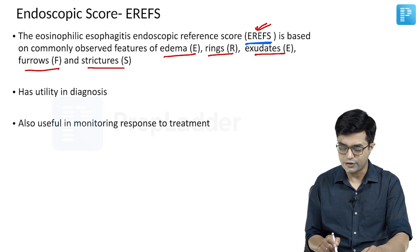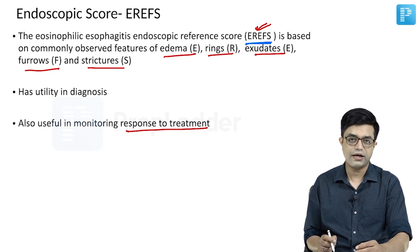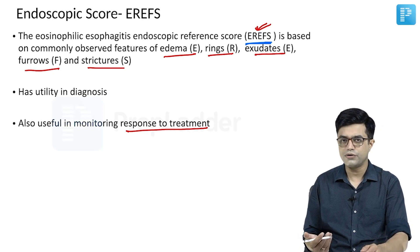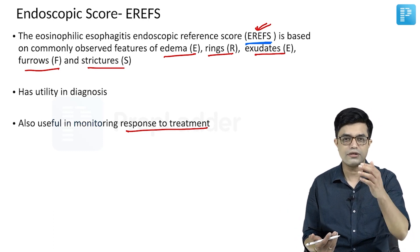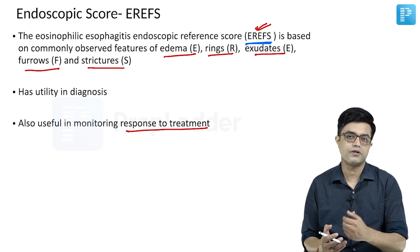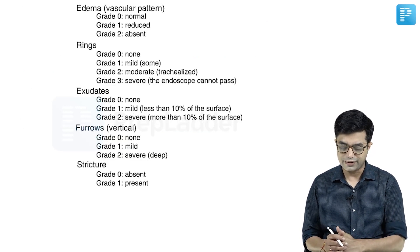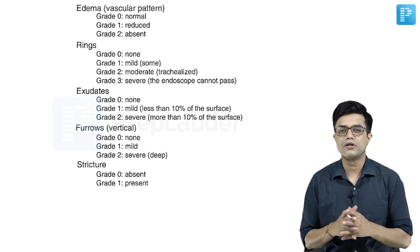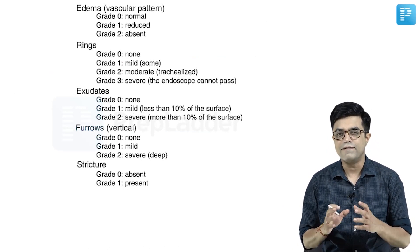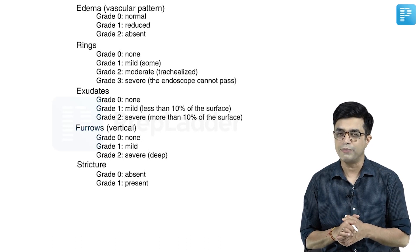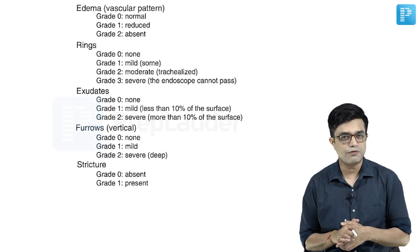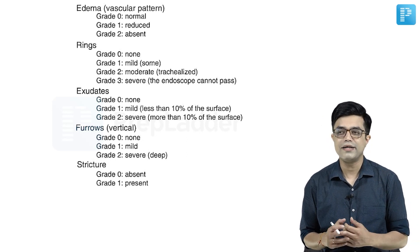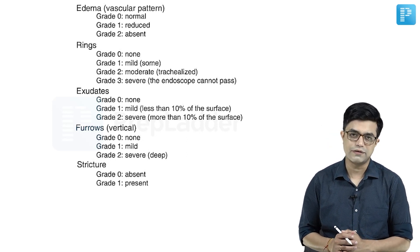It has utility in diagnosis and monitoring response to therapy. If there's a high score of 4, 5, or 6, and on therapy it reduces, that shows good response. This is the grading system we follow. Validation in children is problematic as it requires repeated endoscopic examinations.